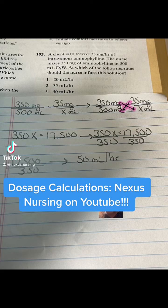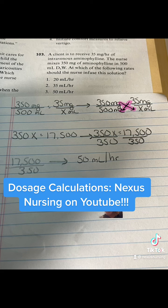Pop quiz number 103. A client is to receive 35 milligrams per hour of IV aminophylline. The nurse mixes 350 milligrams of aminophylline and 500 milliliters of D5W. At which of the following rates should the nurse infuse the solution?